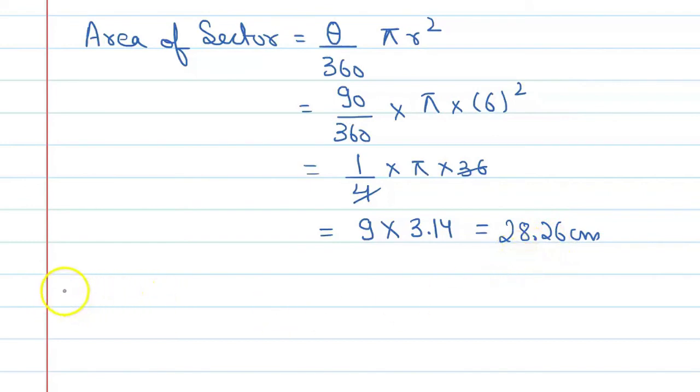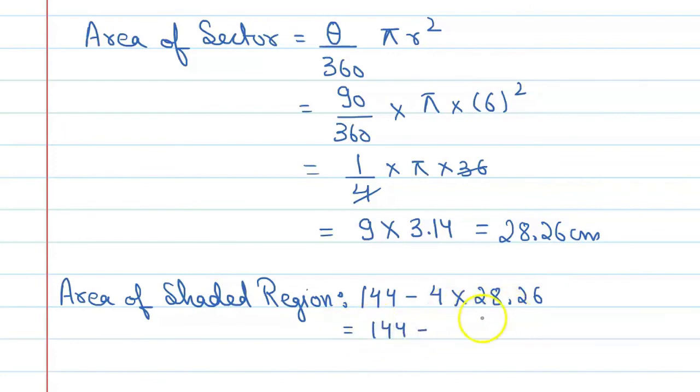Let's find the area of shaded region. Area of shaded region will be equal to area of square, which is 144, minus 4 into area of each sector, that is 28.26. And now 144 minus 4 into this will be 113.04, and this will become 30.96 centimeter square. So this is the required area of the shaded region.